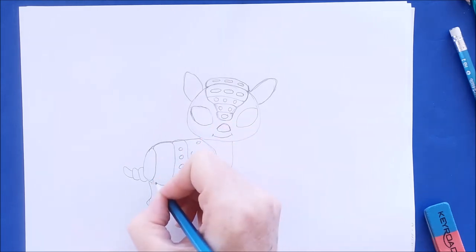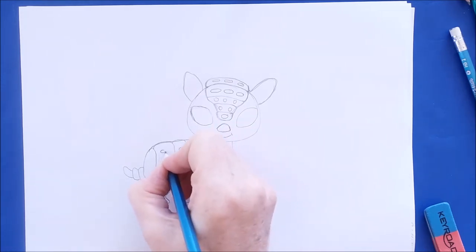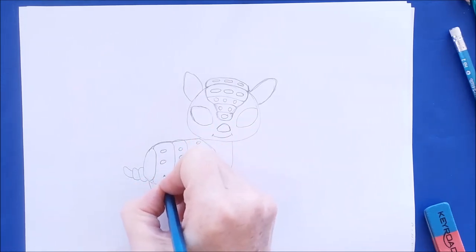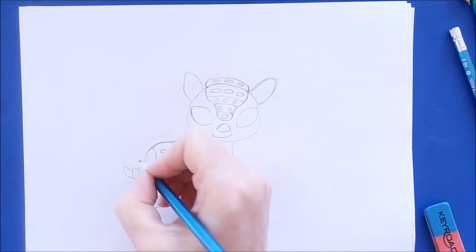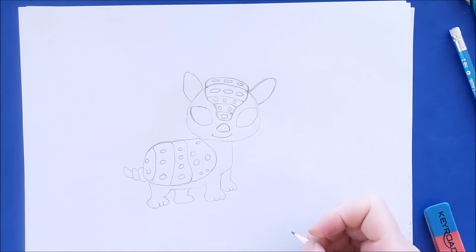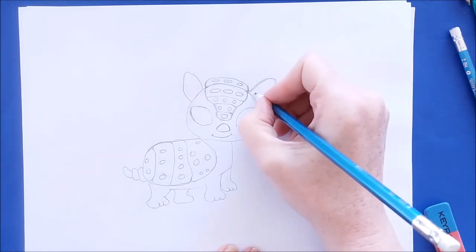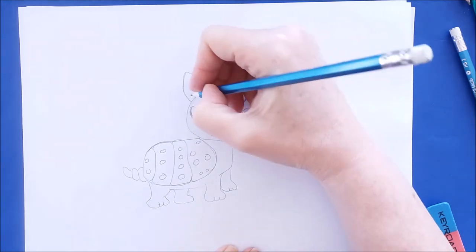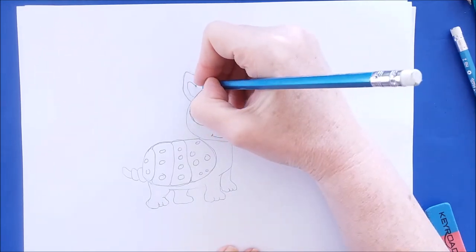And we'll add maybe three circles here, or four. And then we'll add a couple on this section of the armor. And one or two back here. So the armadillo is just about finished. All we need to do is work on the eyes and the ears before we color it.